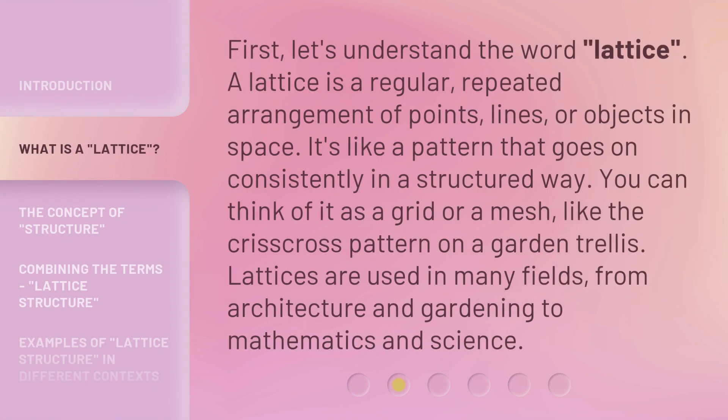First, let's understand the word lattice. A lattice is a regular, repeated arrangement of points, lines, or objects in space. It's like a pattern that goes on consistently in a structured way. You can think of it as a grid or a mesh, like the crisscross pattern on a garden trellis. Lattices are used in many fields, from architecture and gardening to mathematics and science.